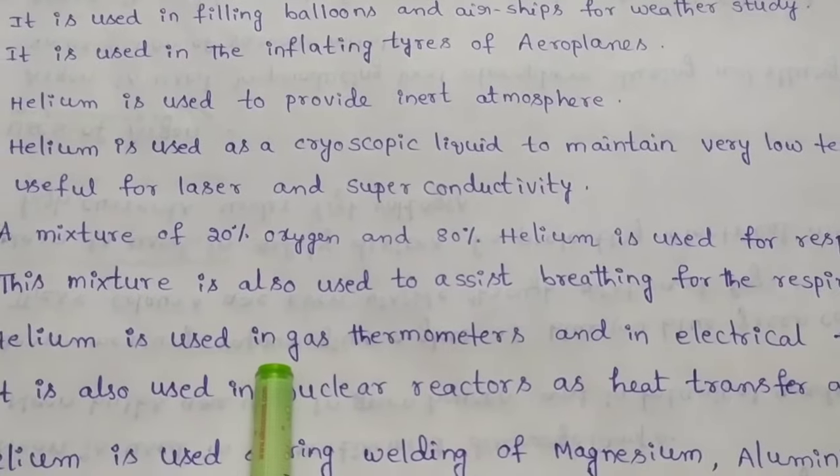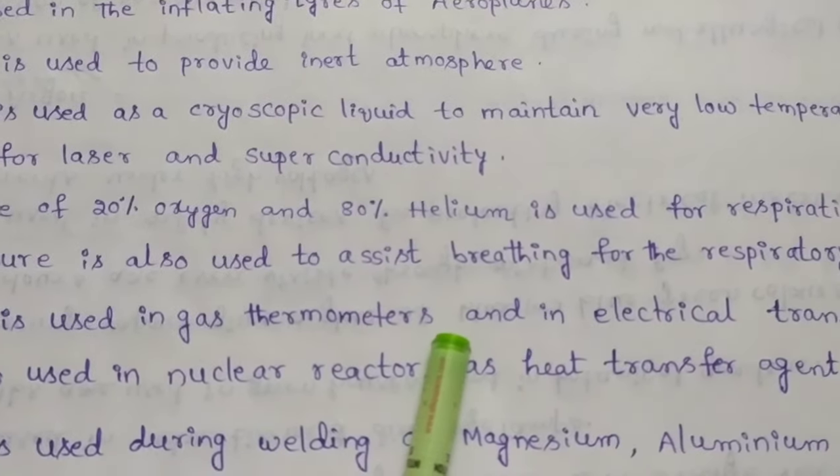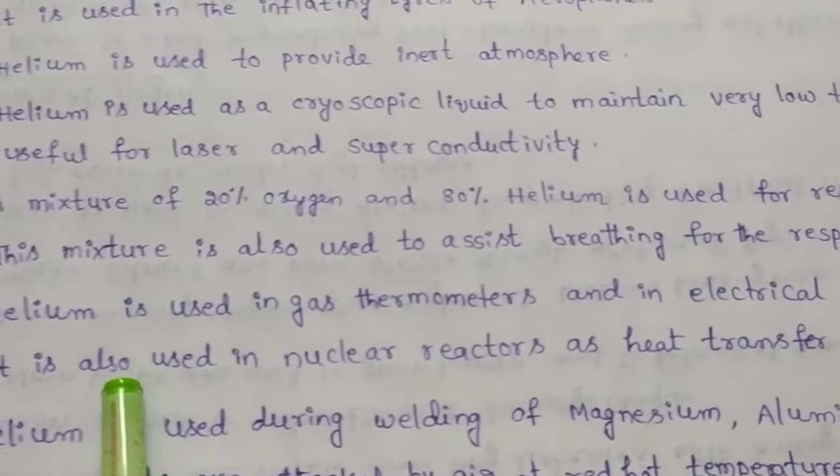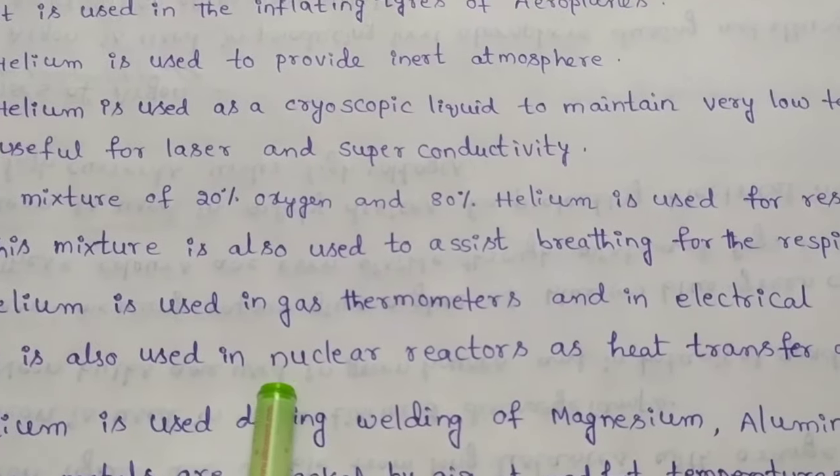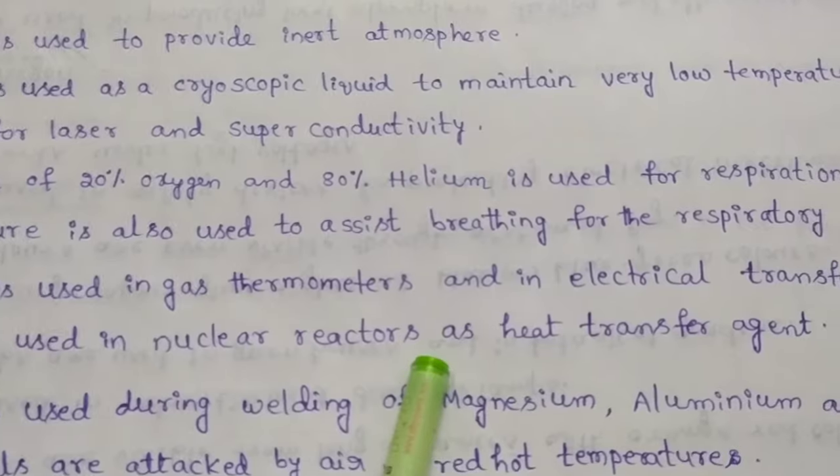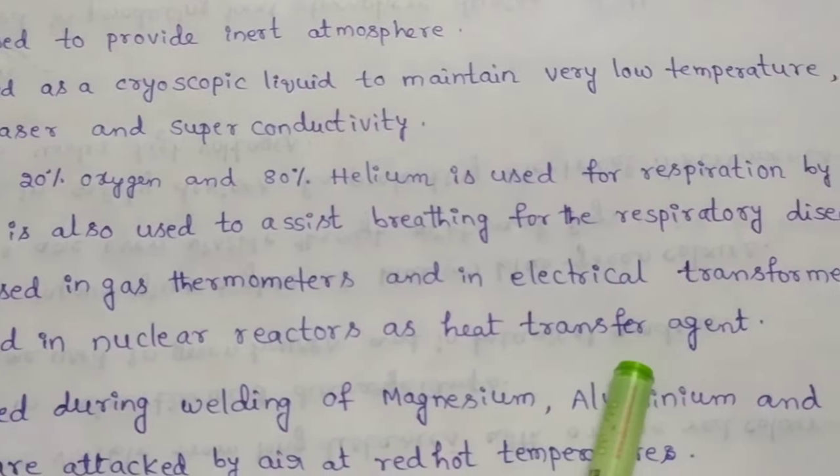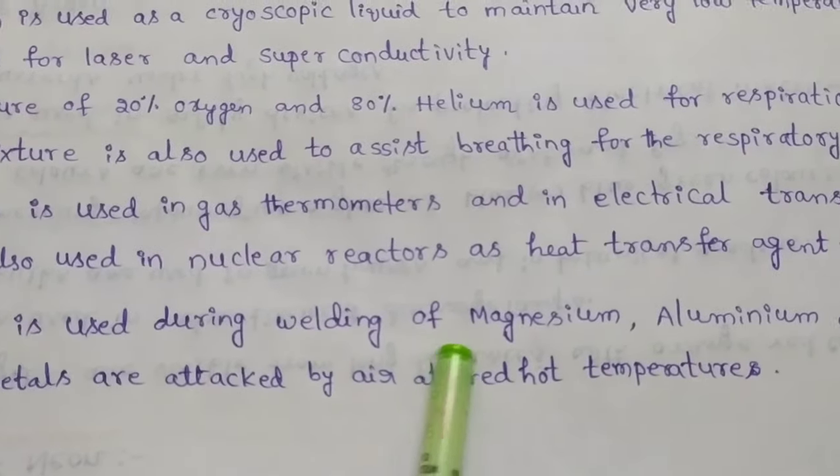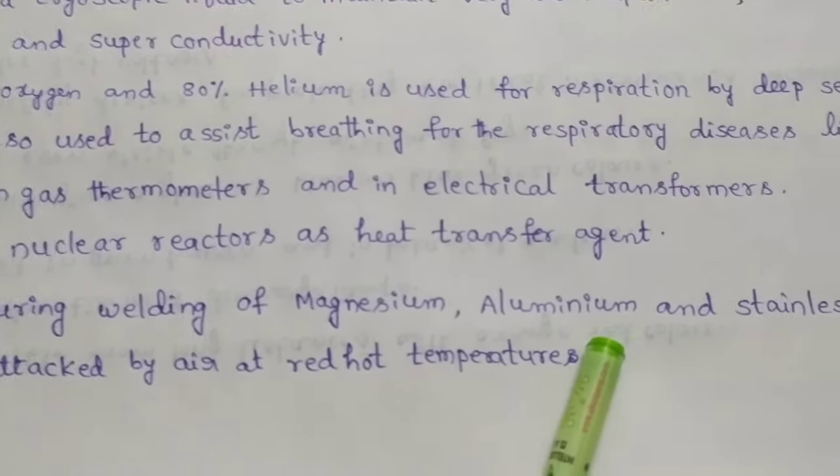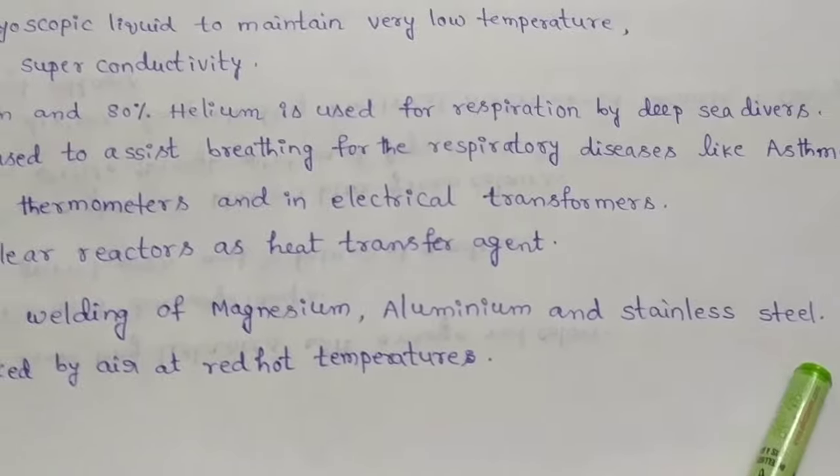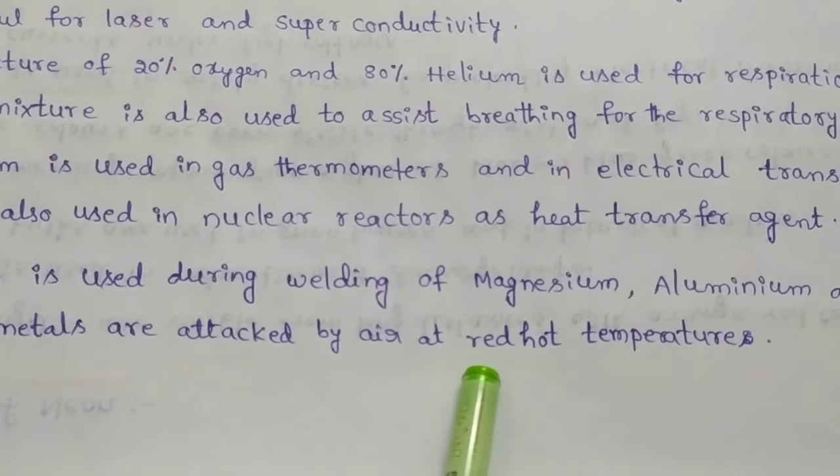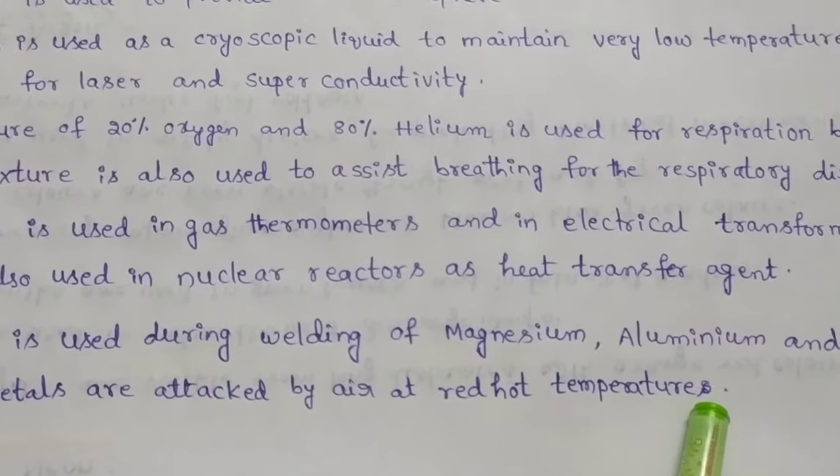Helium is used in gas thermometers and in electrical transformers. It is also used in nuclear reactors as heat transfer agent. Helium is used during welding of magnesium, aluminium and stainless steels. These metals are attacked by air at red hot temperatures.